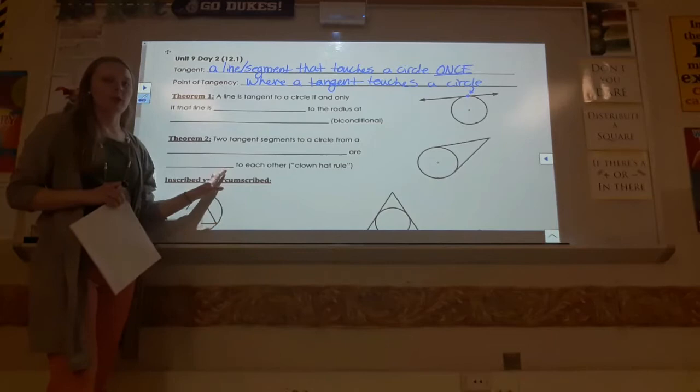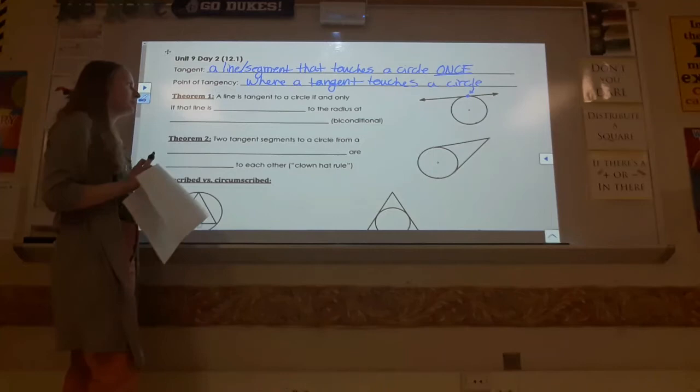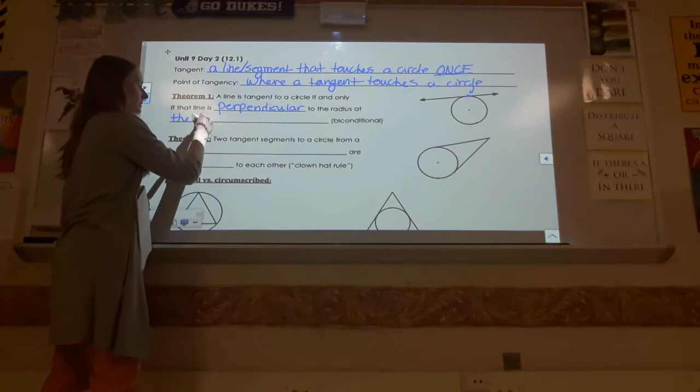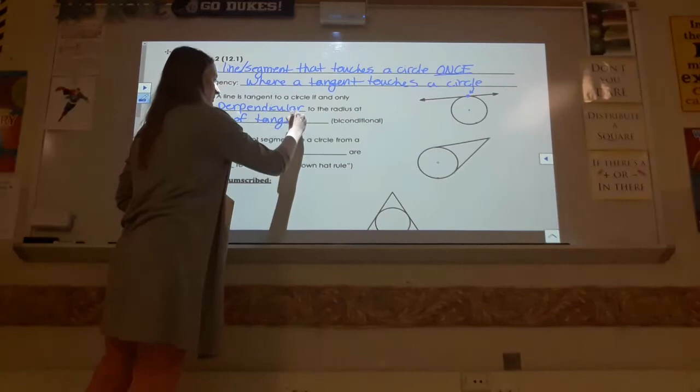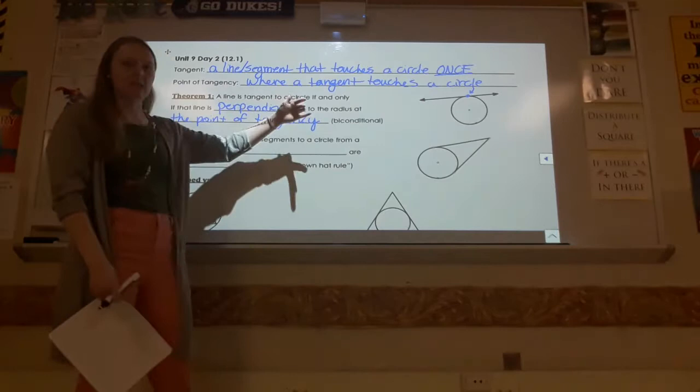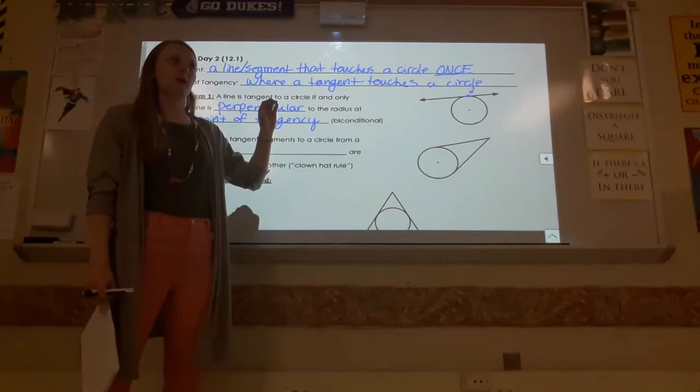We have two different theorems we're going to be working with. The first one says a line is tangent to a circle if and only if that line is perpendicular to the radius at the point of tangency. And this is a biconditional, so it means it works both directions. You could say first we know it's a tangent, therefore it's perpendicular to the radius, or it's perpendicular to the radius, therefore it's a tangent. So you can use this theorem because you know there's a right angle.